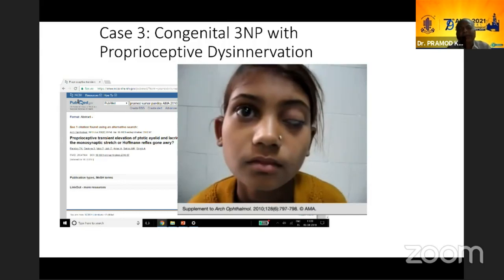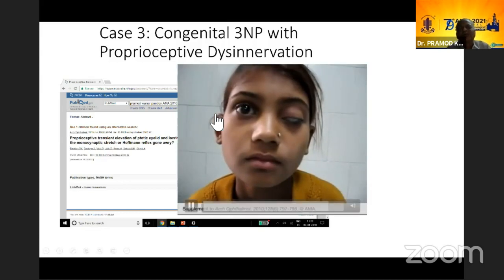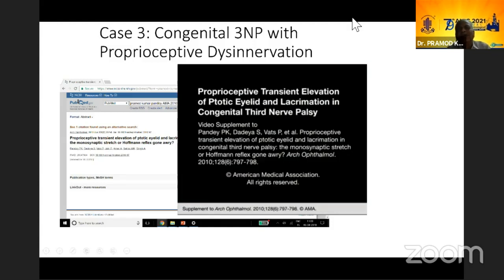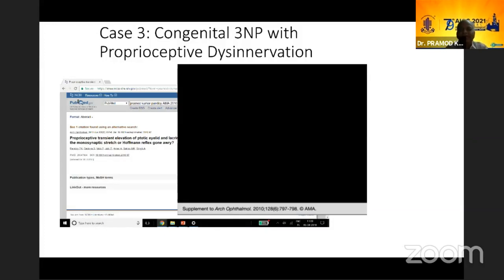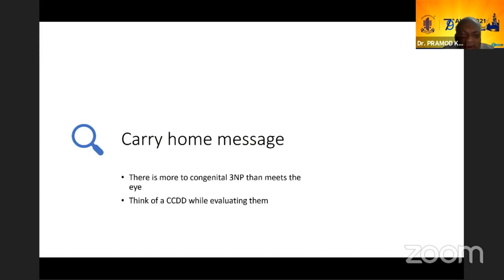These three cases show that third nerve palsies can have a lot of disinervation and should be looked at differently. Third nerve palsies have also been shown to have systemic associations, so they are not always isolated. MRI in some cases may reveal interesting findings. The take-home message is: there is more to third nerve palsies than meets the eye — think of a CCDD while evaluating third nerve palsies.